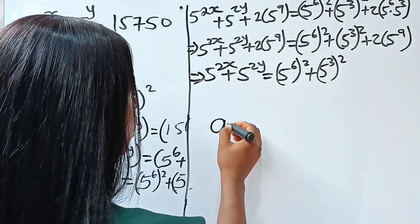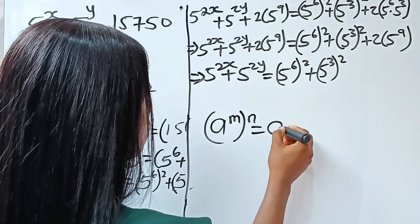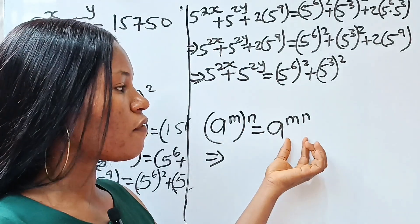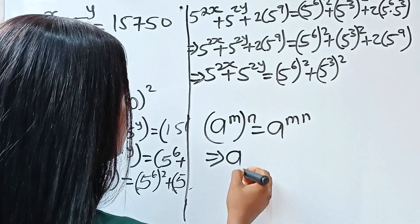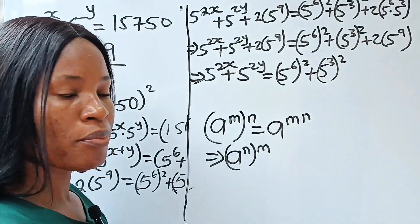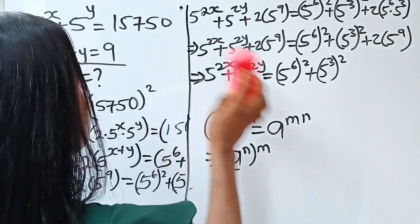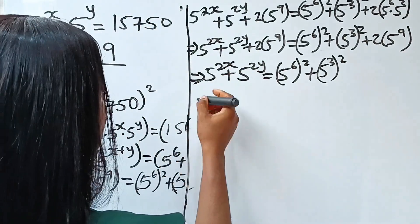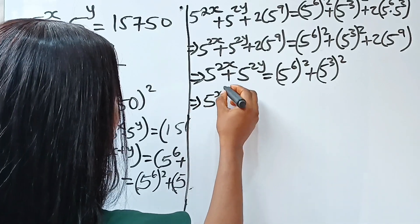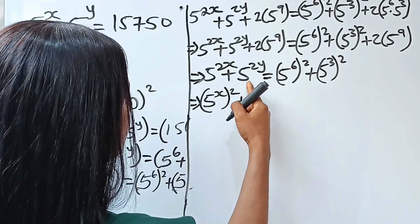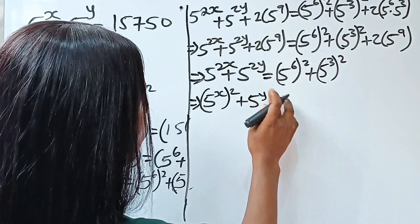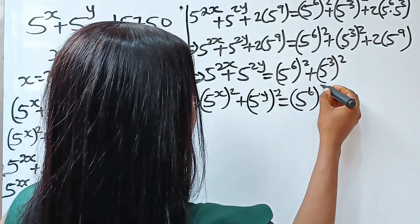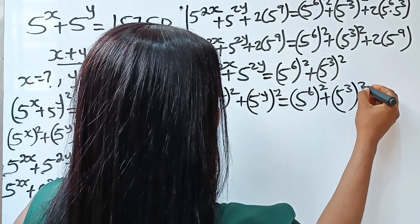Because a to the power of m raised to the power of n equals a to the power of mn, you can interchange the position of the exponents without affecting the result. That means we can write this as 5 to the power of x squared plus 5 to the power of y squared, equal to 5 to the power of 6 squared plus 5 to the power of 3 squared.